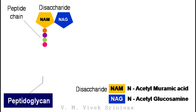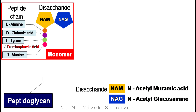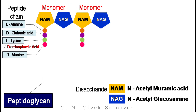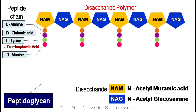The polypeptide chain consists of amino acids like L-alanine, D-glutamic acid, L-lysine, and D-alanine. In place of L-lysine, sometimes diaminopimelic acid will be present. This is the monomeric unit of the peptidoglycan. These monomers are arranged in rows by alternating N-acetylmuramic acid and N-acetylglucosamine molecules to form the disaccharide polymer.